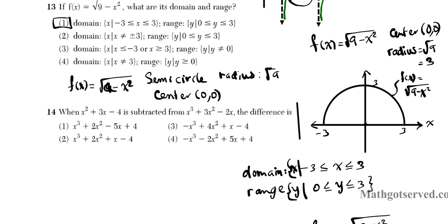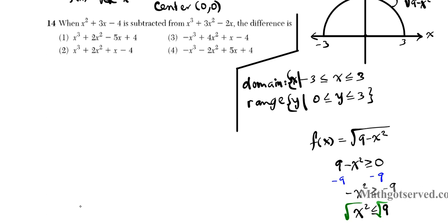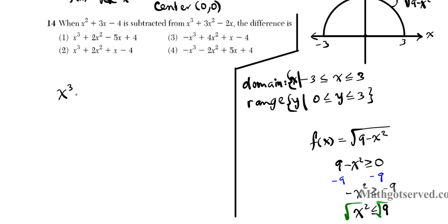Now let's move on to question 14. It's easy to mess this up if you're not careful with your signs. It says: when x² + 3x − 4 is subtracted from x³ + 3x² − 2x, what is the difference? We're subtracting the first expression from the second, so we have (x³ + 3x² − 2x) minus (x² + 3x − 4). Notice how I lined up the terms with like degrees.